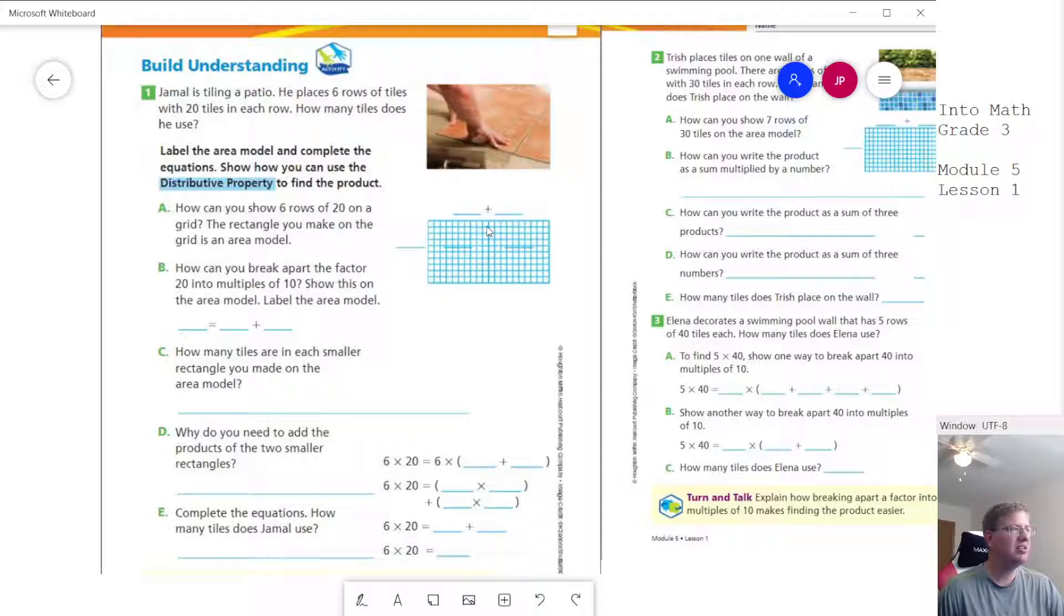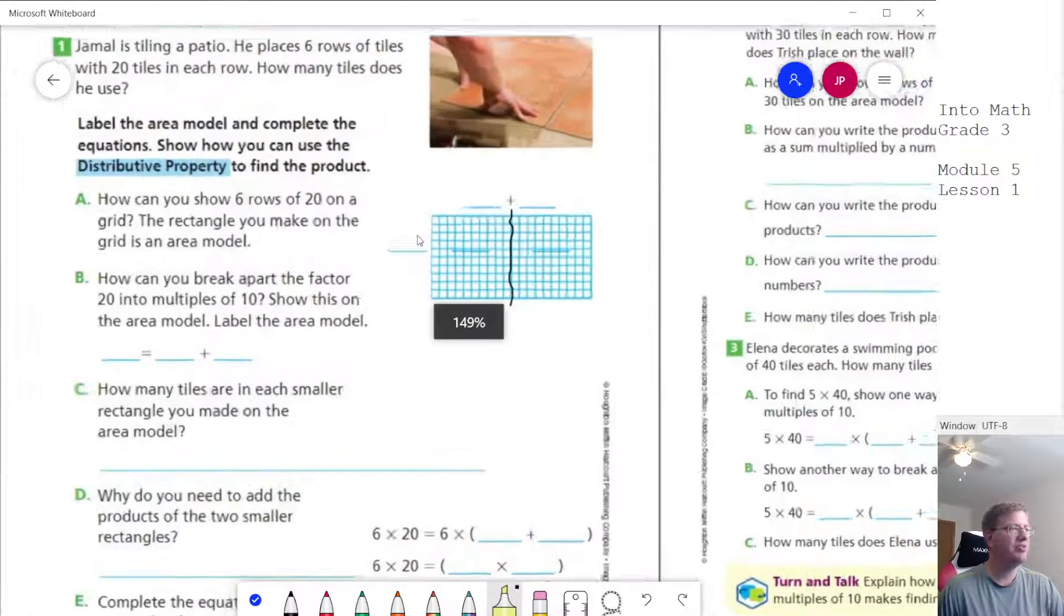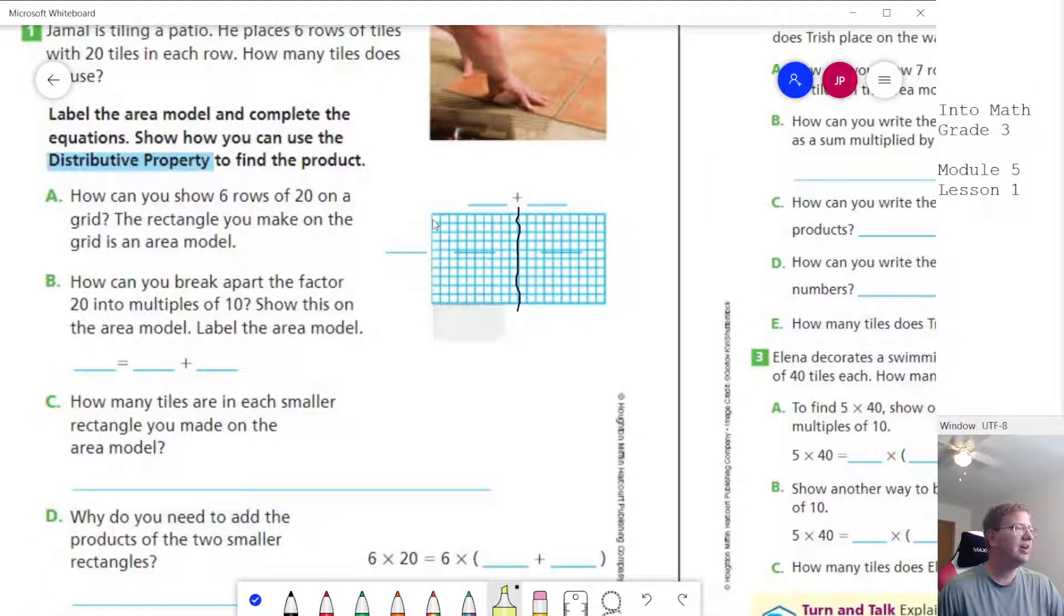So we have a 10 by 10 block here and we have a 10 by 10 block. For the book it probably should show a little bit more clearly than it does here, but imagine that we have a darker line here that breaks up our groups of 10. So we are going to place six rows of tiles with 20 in each row, and so to do that, let me take my highlighter and zoom in just a tad. We could go ahead and shade in six rows. So here's my first row of 20 and I have 10 plus 10.